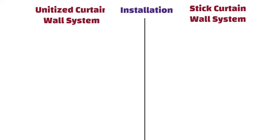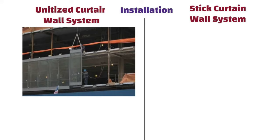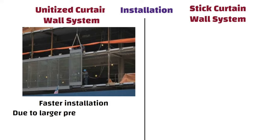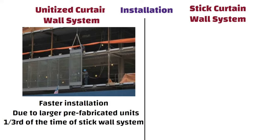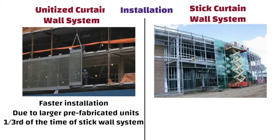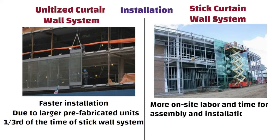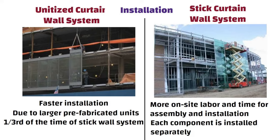Installation: Unitized systems are known for their faster installation on site due to larger prefabricated units. For installation, it takes one third of the time of a stick wall system. Whereas, stick curtain wall systems require more on-site labor and time for installation, as each component is installed separately.